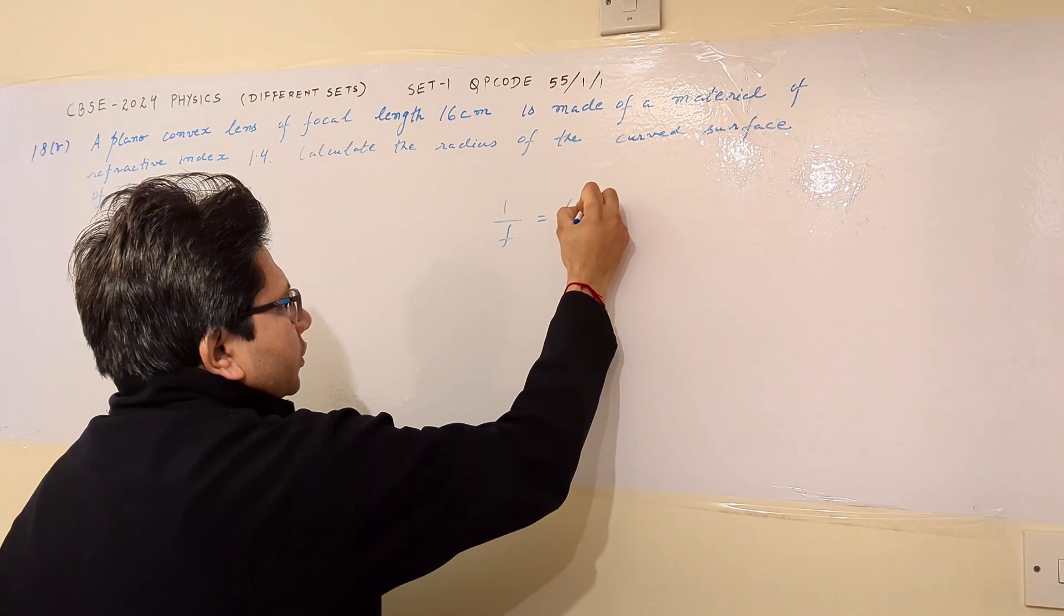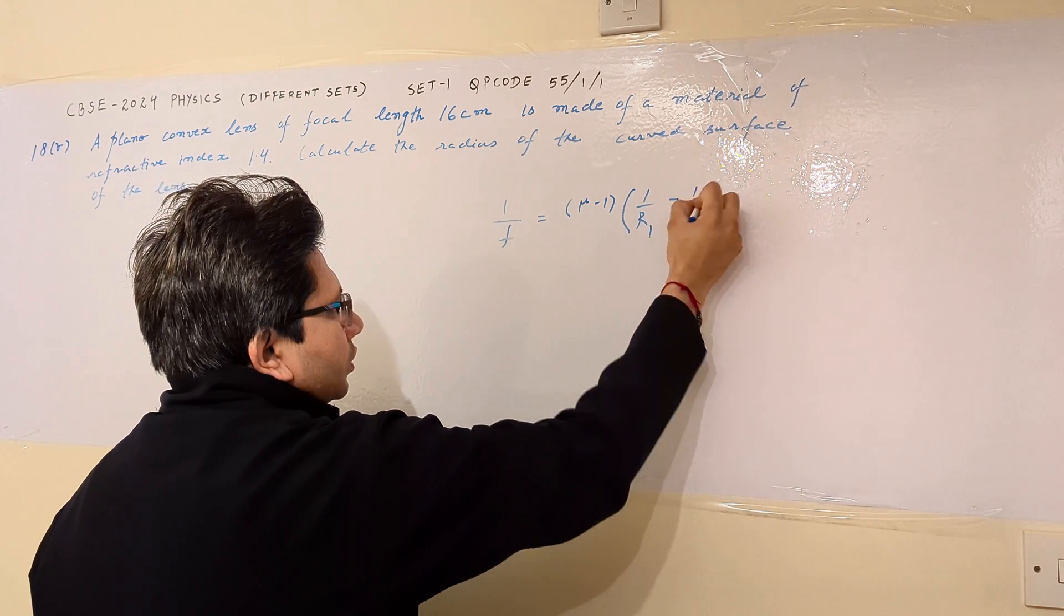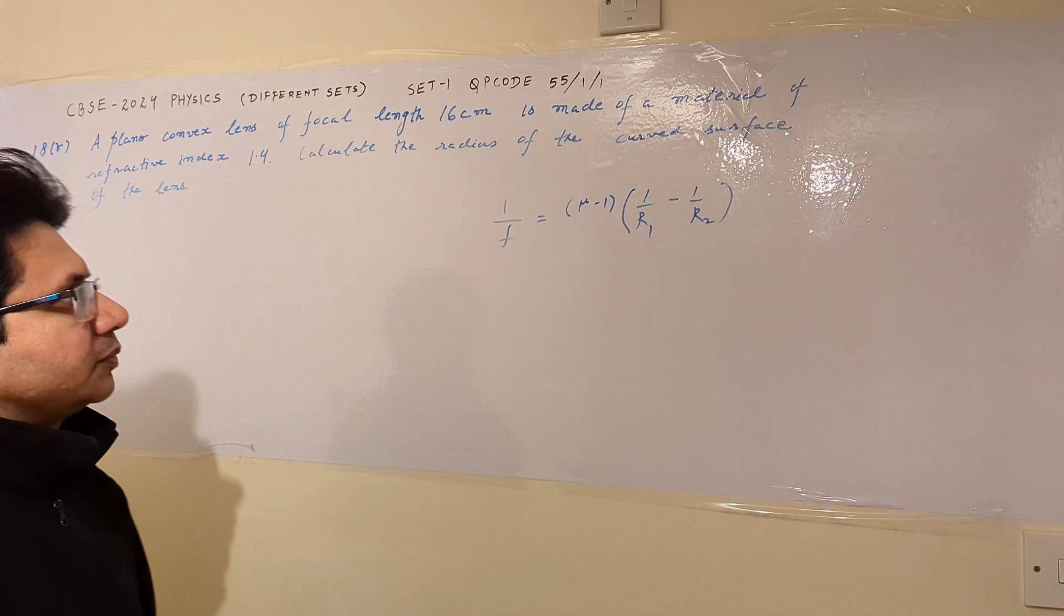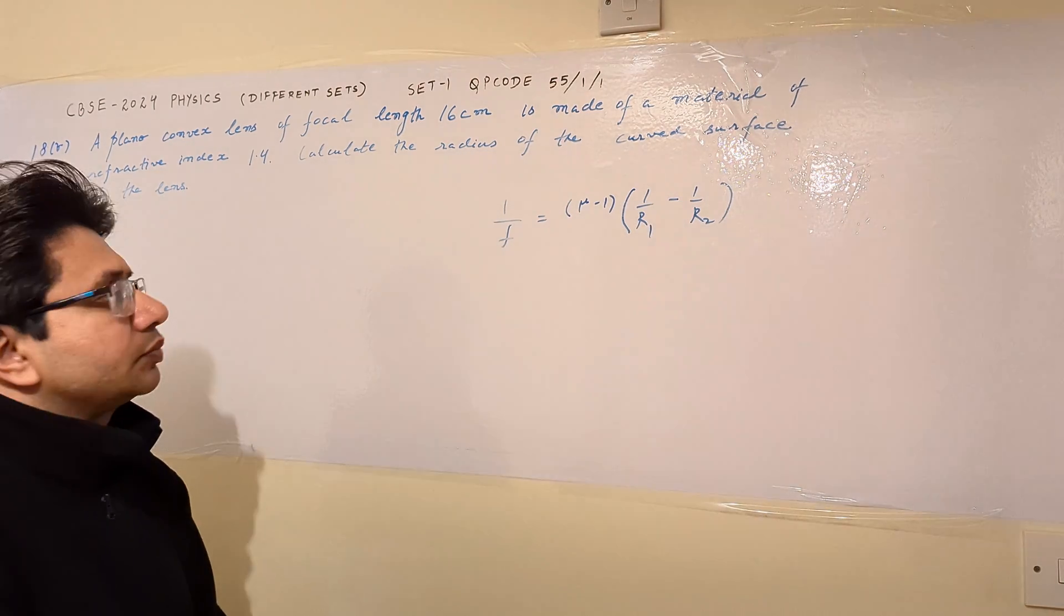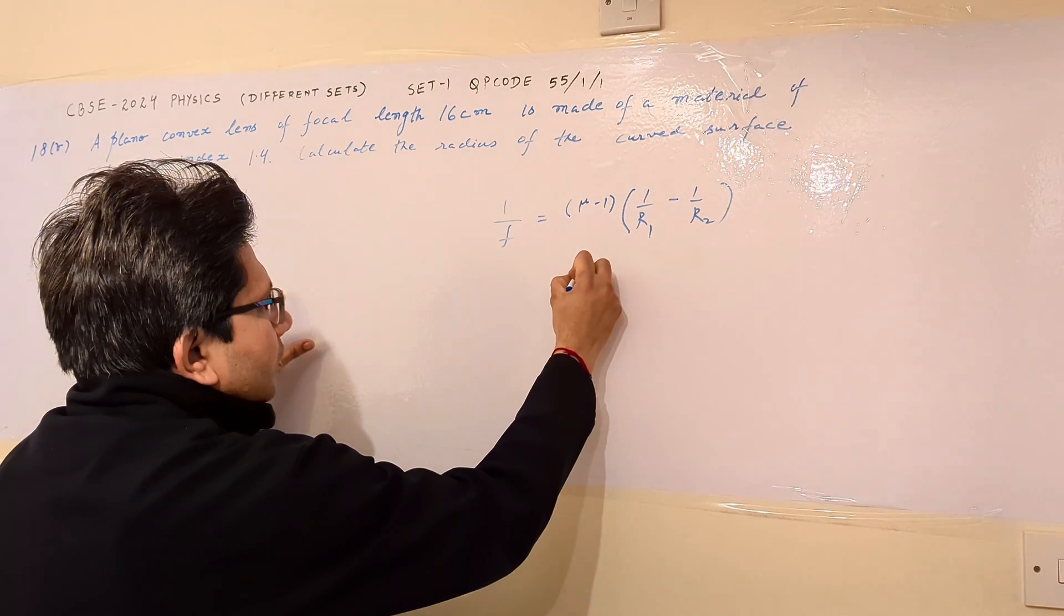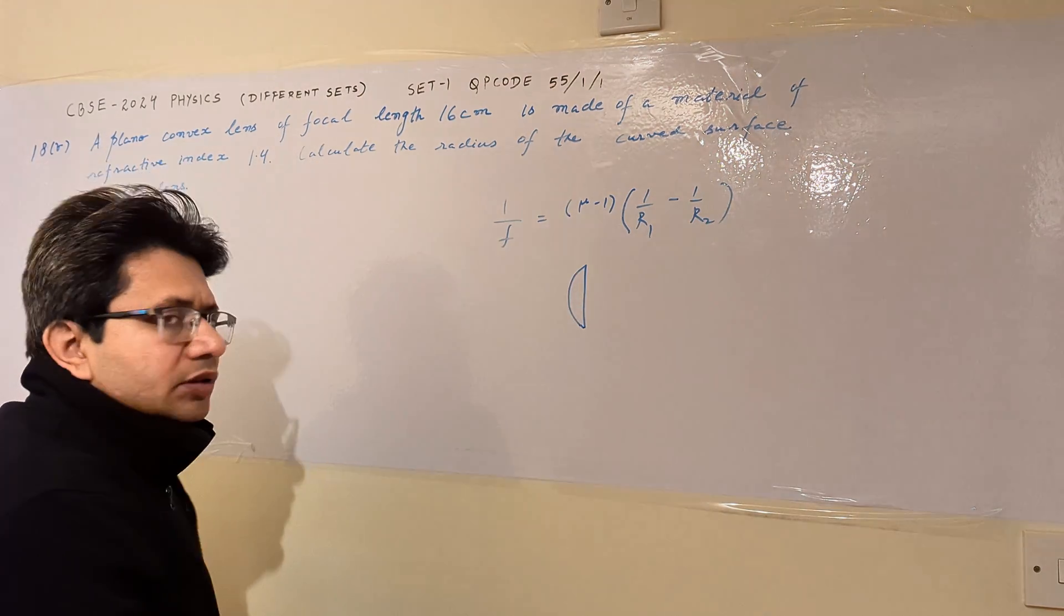1 upon f equals mu minus 1, times 1 upon r1 minus 1 upon r2. This is the formula for a lens. This is a plano-convex lens, meaning one side is plane and another side is convex.